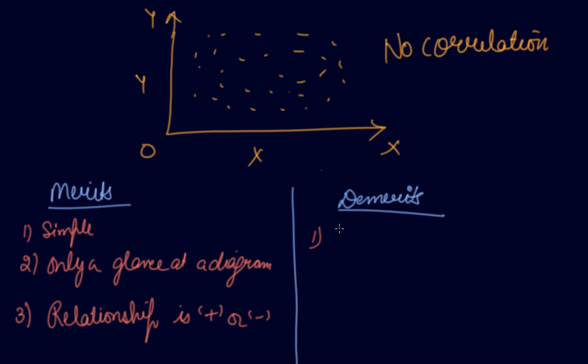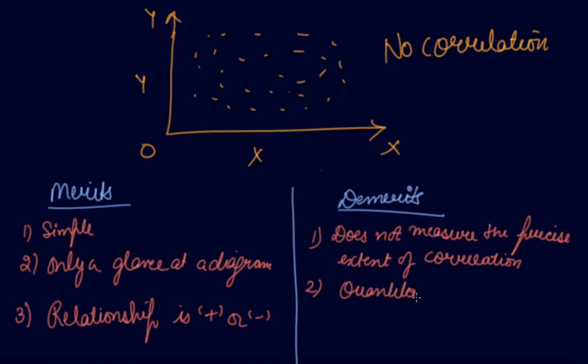What are the demerits? The scatter diagram does not measure the precise extent of correlation. Like, from where, how much it is correlated, is it a 0.69 correlation or a 0.39 correlation? It does not give the relationship in the quantitative measure. It does not give the quantitative measure of the relationship between the two variables. It gives only approximation, approximate idea about a relationship. But it does not tell us how much the actual correlation between the variable is.